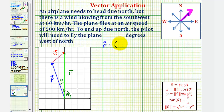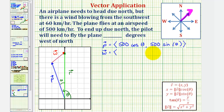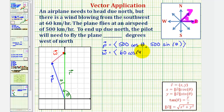So vector p would have an x component of 500 times cosine theta and a y component of 500 sine theta. Now for vector w, because it has a speed of 60 kilometers per hour, the magnitude is 60. The x component would be 60 times cosine theta. We can find theta because we know that the wind is blowing out of the southwest, or blowing in the direction of northeast — so theta would be 45 degrees. Therefore the x component is 60 cosine 45 degrees and the y component is 60 sine 45 degrees.